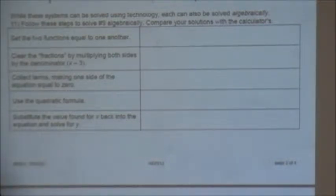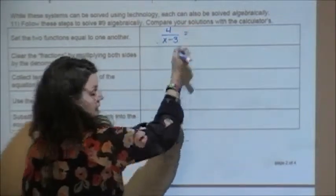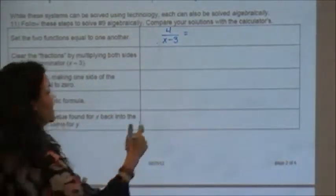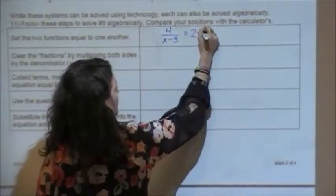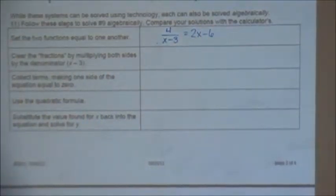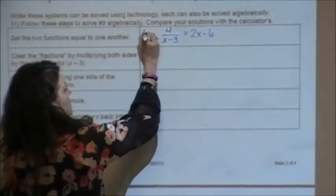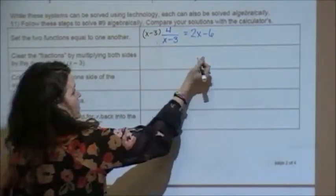The first thing to do is set the two equations equal to each other. So I have 4 over x minus 3 equals 2x minus 6. Step number 2 says clear the fractions by multiplying both sides by the denominator. So I'm going to multiply both sides by x minus 3 to clear the fraction.